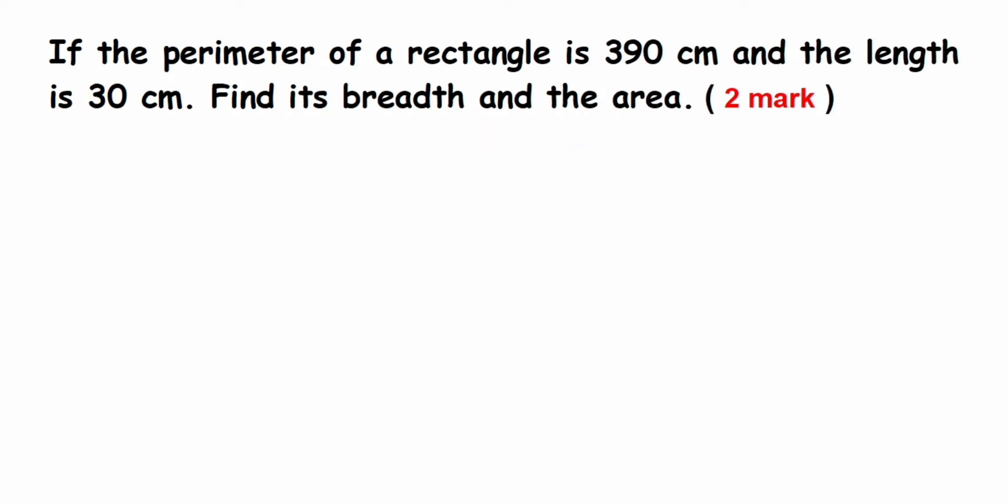They have given two things to us: one is the perimeter which is 390 centimeter, and they have given the length which is 30 centimeter. We have to find out the breadth and the area. So first we're going to find out the breadth because using that we can find out the area.